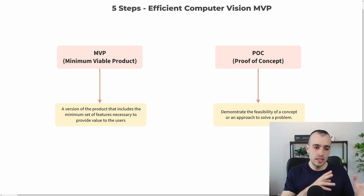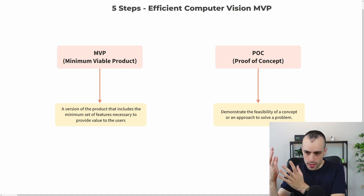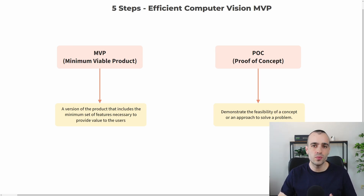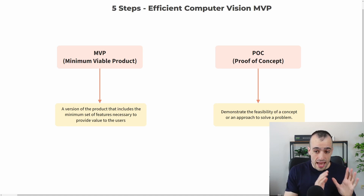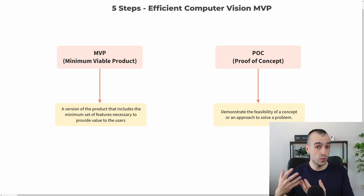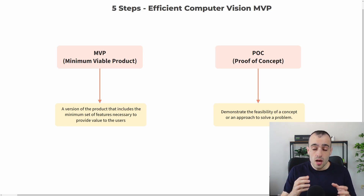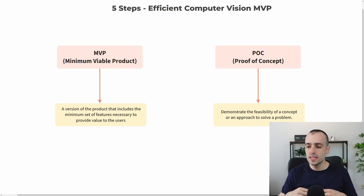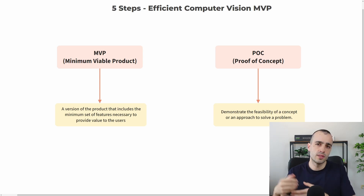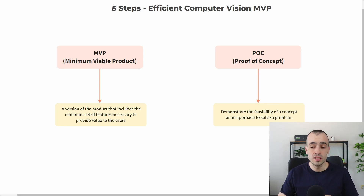Before we get into the 5 steps, let's find the difference between an MVP — which is the minimum viable product — and a POC, which is the proof of concept. If you are new to the field and not familiar with this terminology, it's something you will get to know soon because it's very well known in the field and it's asked about especially when building AI software.